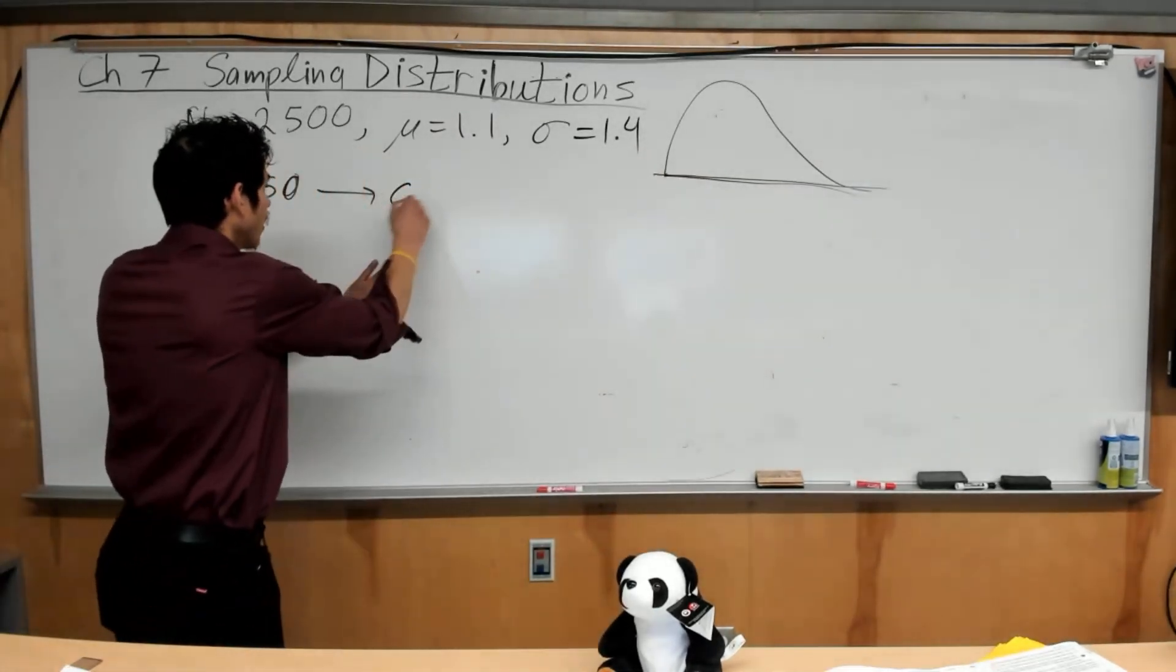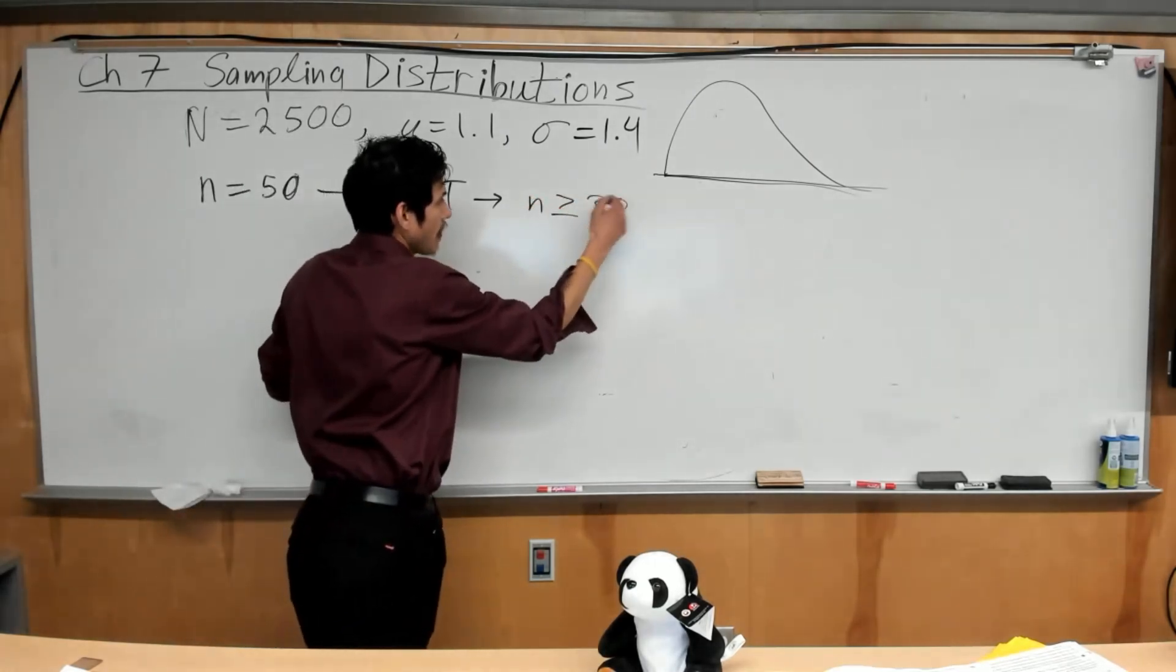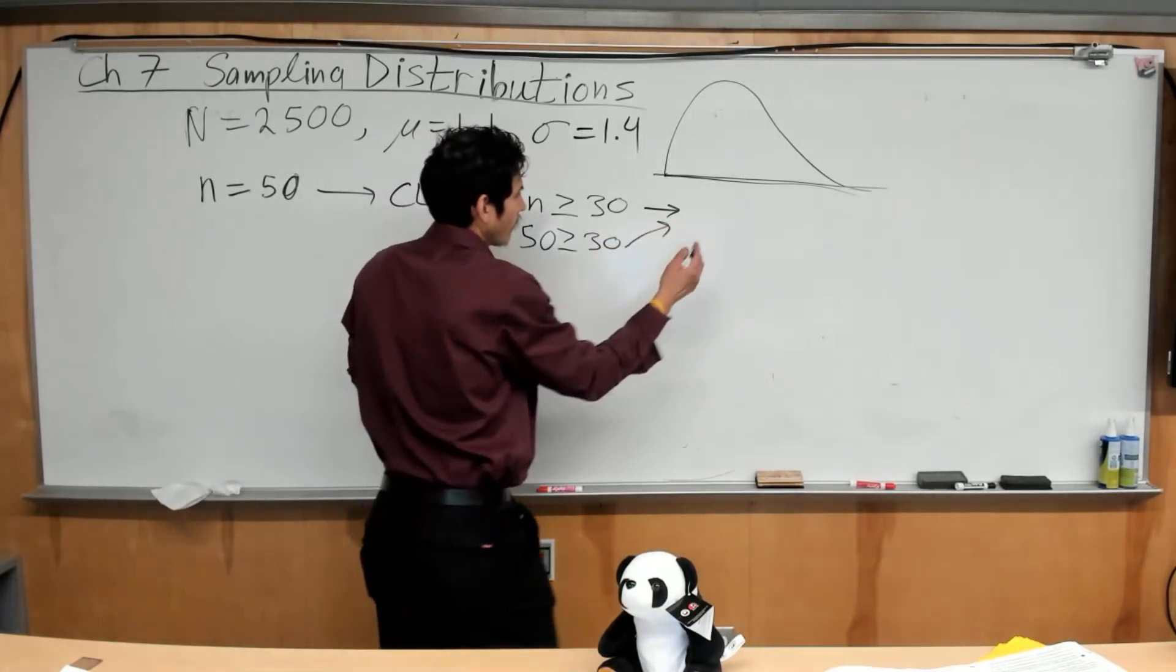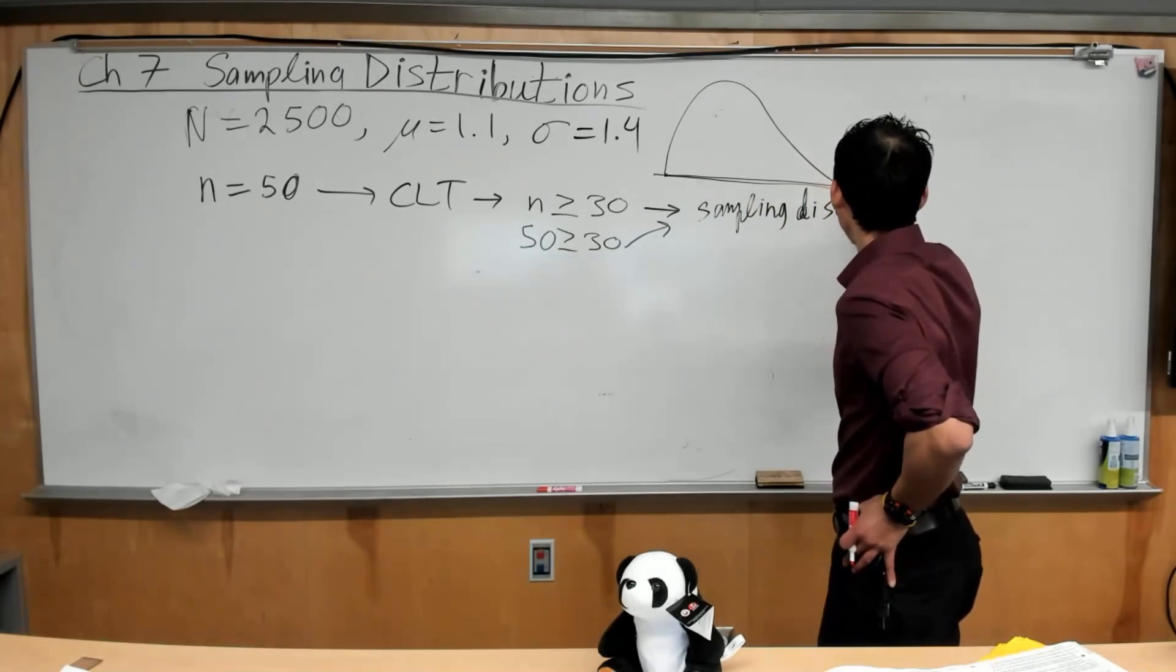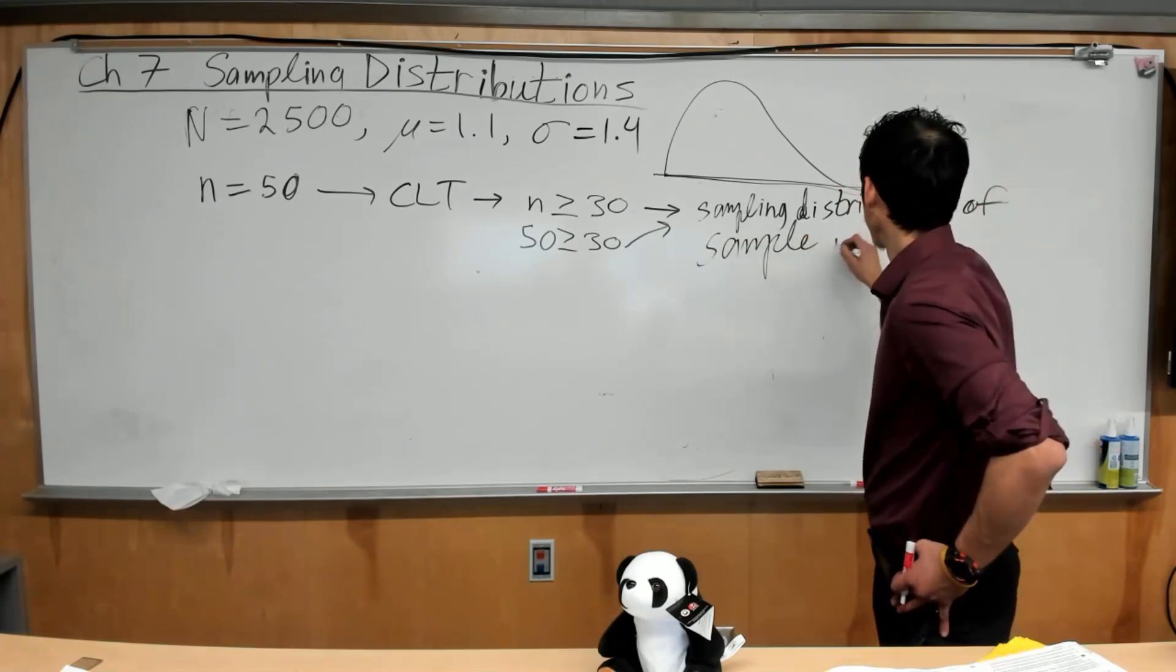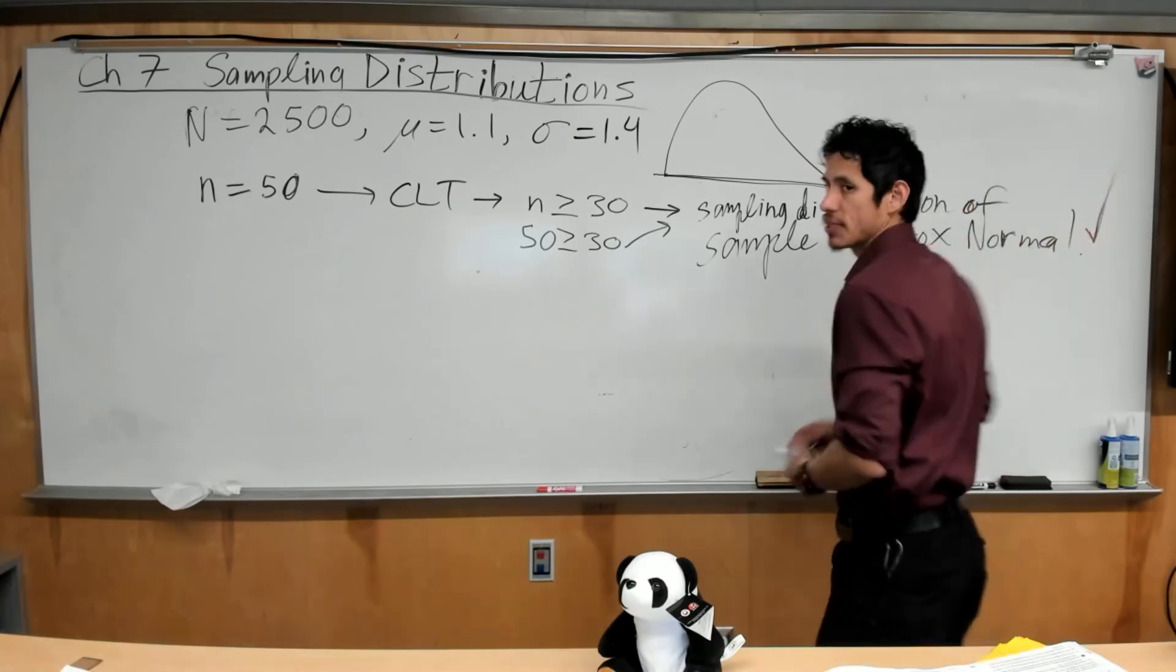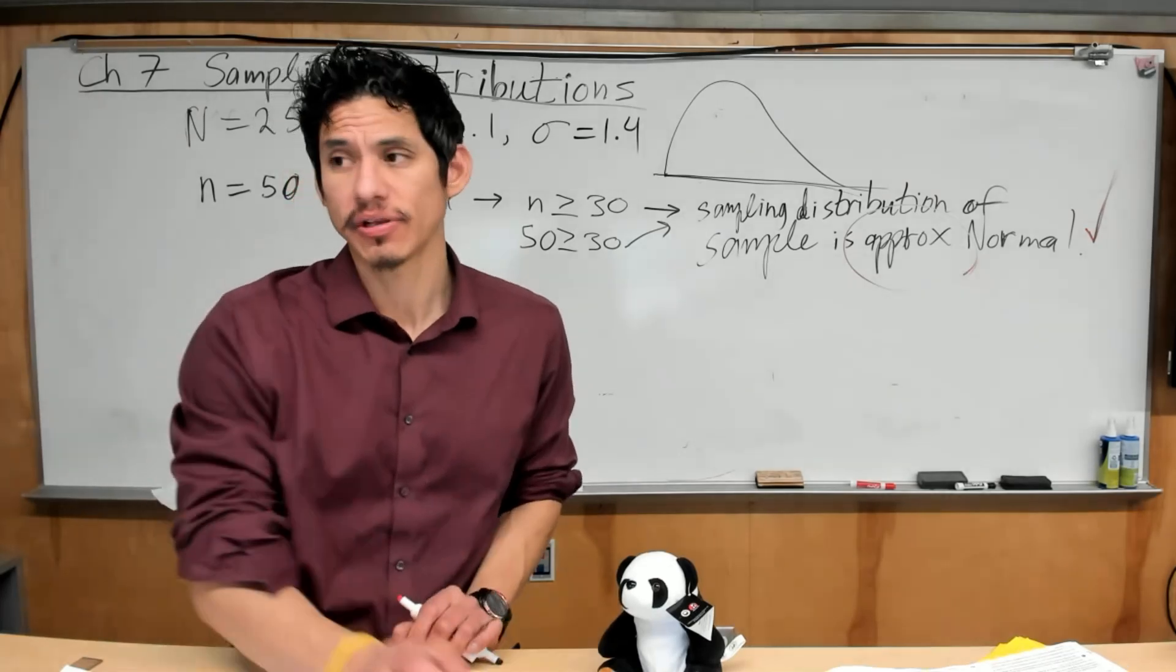And it's asking for the shape of the sampling distribution of a sample mean. Now, even though the population is skewed to the right, population is skewed to the right, so it's going to be looking like this. Because of the central limit theorem, since your sample is at least 30, since n is greater than or equal to 30, we can say that the distribution is approximately normal. Because n is 50, so 50 is greater than or equal to 30. Sampling distribution of sample mean is approximately normal. Make sure you say approximately. They're pretty strict and some professors are dicks about it. So just make sure you say that because they will usually mark it down if you don't, because it's not exactly normal.